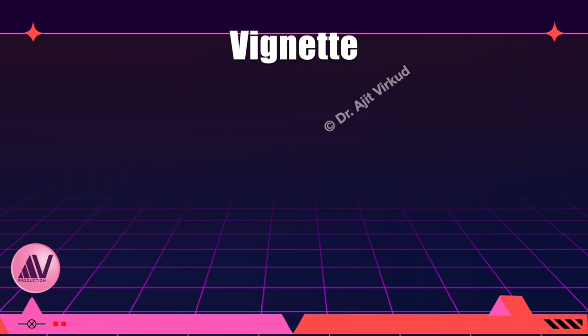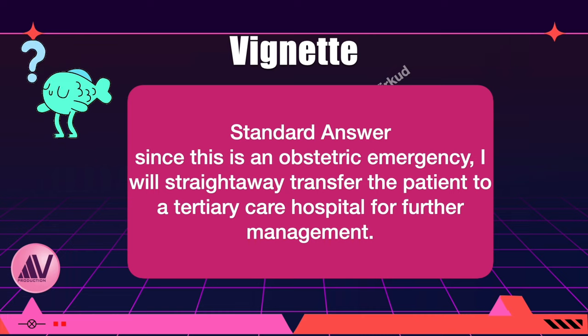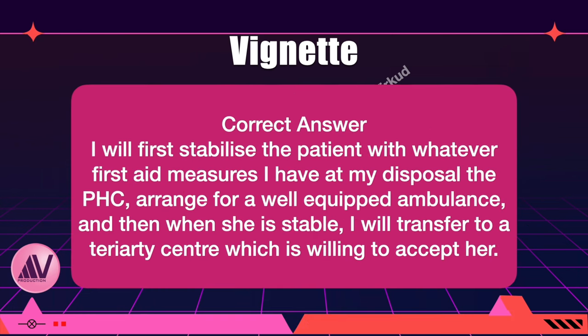I will now present a case. A 20-year-old primigravida is brought to a primary health center with a history of sudden onset convulsion. She is 32 weeks gestation; blood pressure is 164/112 mmHg. You are the primary obstetrician on duty — what will you do? The correct answer is: I will first stabilize the patient with whatever first aid measures I have at my disposal at the primary health center, and then when she is stable, I will transfer her to a tertiary care center.